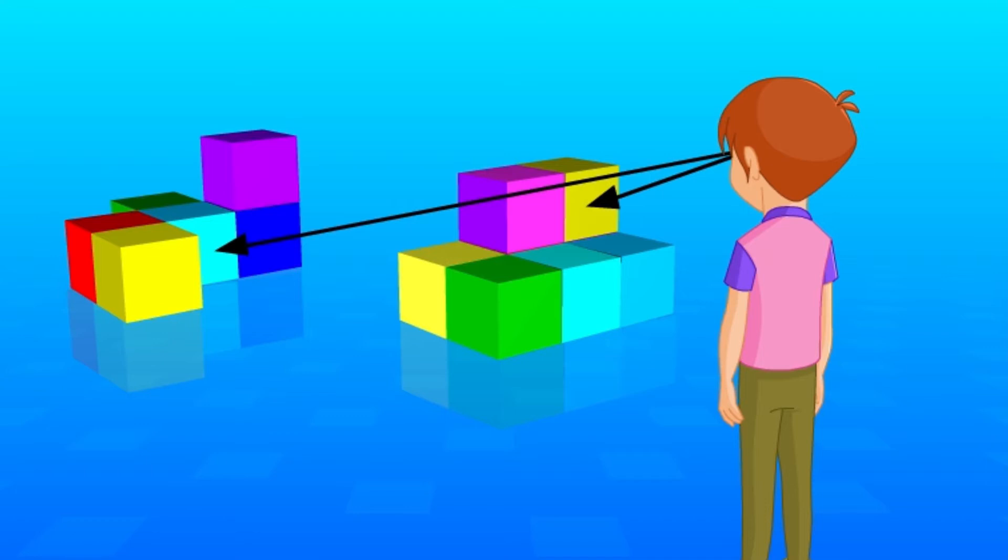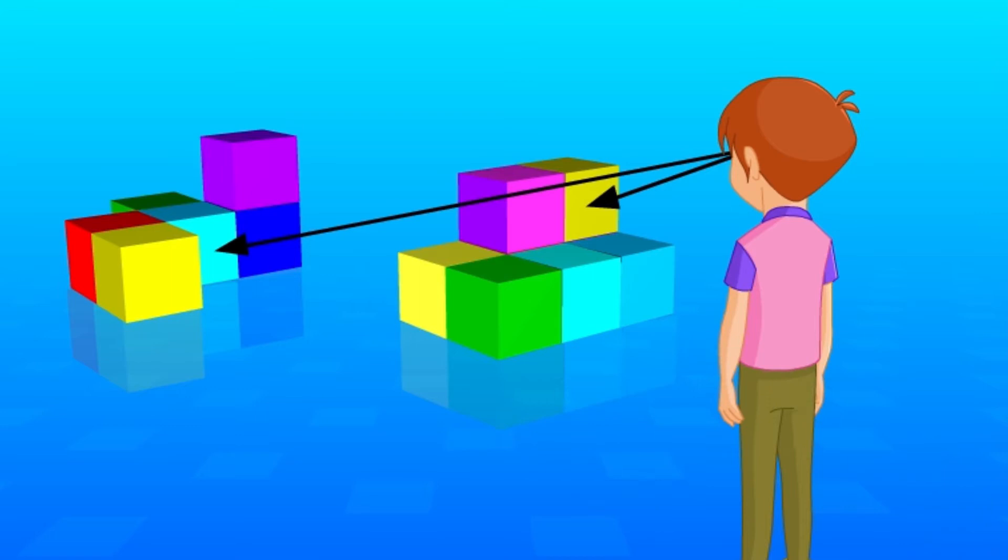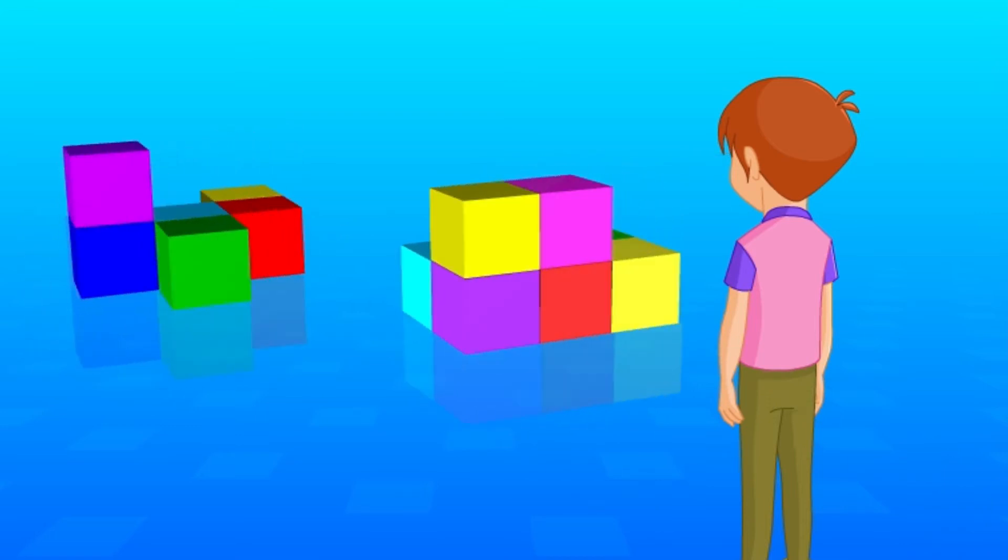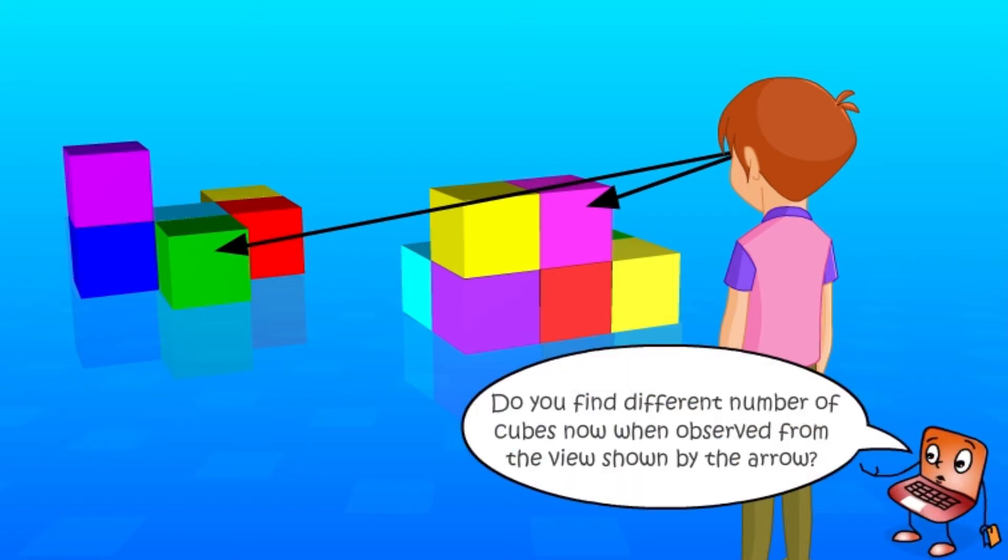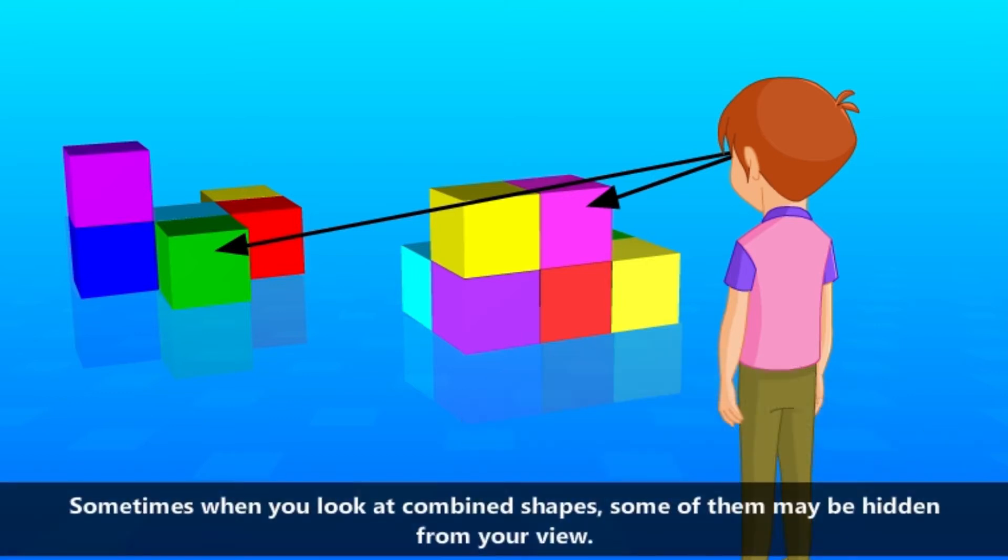John is looking at these models. Can you count the cubes in the objects when observed in the direction of the arrow? The objects are now rotated and John's view changes. Do you find a different number of cubes now when observed from the views shown by the arrow? Sometimes when you look at combined shapes, some of them may be hidden from your view.